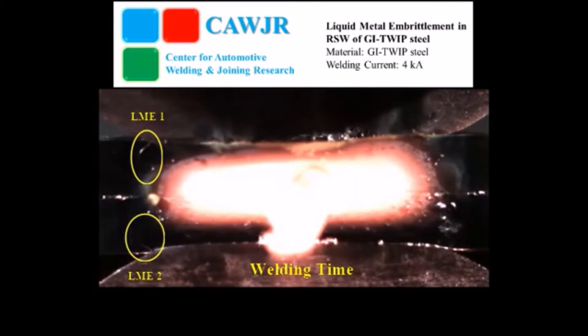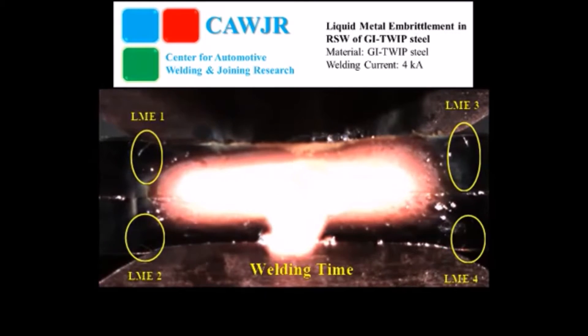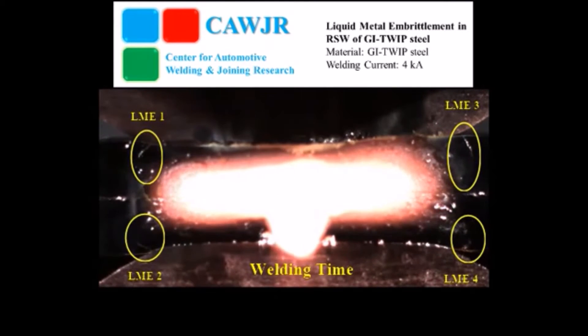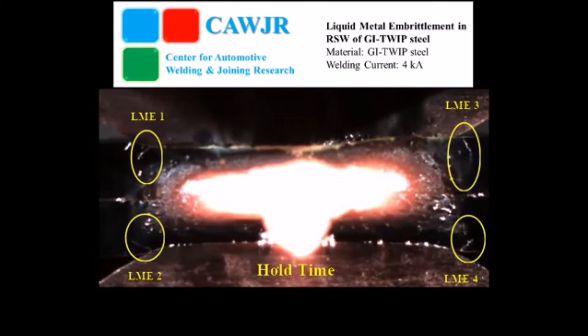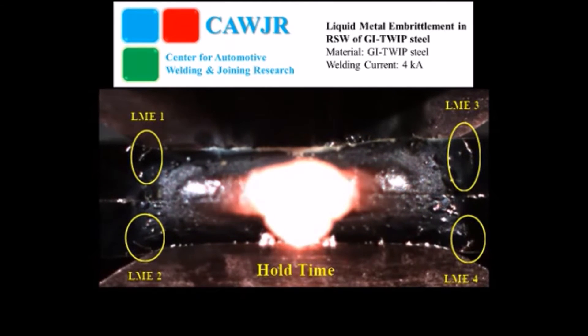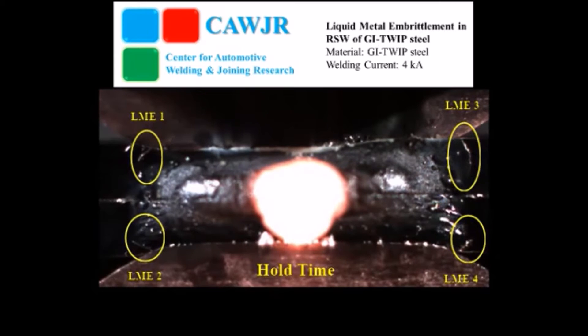Copper steels and stainless steels are susceptible to liquid metal embrittlement by zinc and lithium. Aluminum and aluminum alloys are susceptible to liquid metal embrittlement by mercury and zinc.